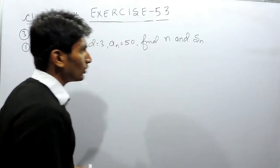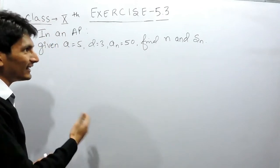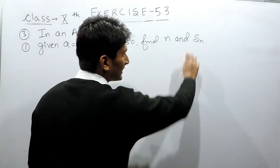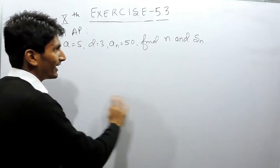You have to find N, means you have to find the number of terms in that AP, and you have to find SN, means you have to find the sum of that AP.